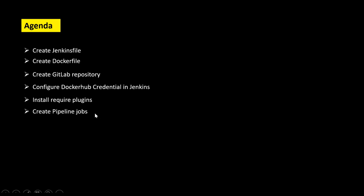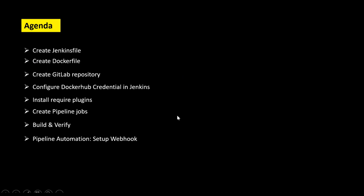Finally we will create our first pipeline job. After that we will trigger the job and verify whether all the automation process is occurring successfully or not. Finally we will come to the automation section and see how we can automate the entire pipeline by setting up the webhook inside GitLab, so that whenever the developer pushes any changes, the job will be automatically triggered.